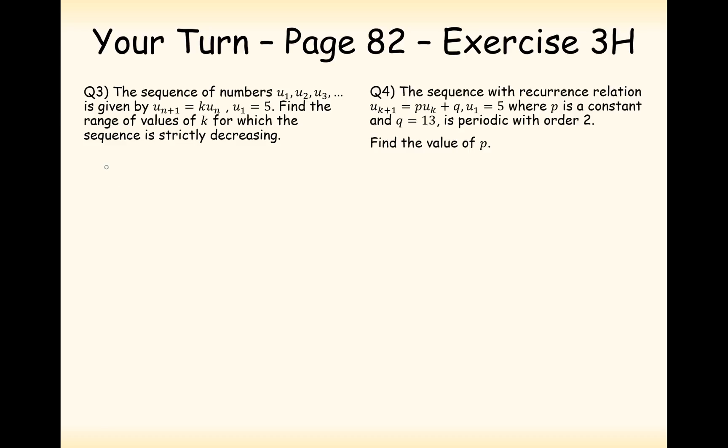Okay then. So the first question here. The sequence of numbers u_1, u_2, u_3, and so on, is equal to u_{n+1}, which is equal to k times u_n, where u_1 is equal to 5. Find the range of values for k for which the sequence is strictly decreasing. So it decreases every time.